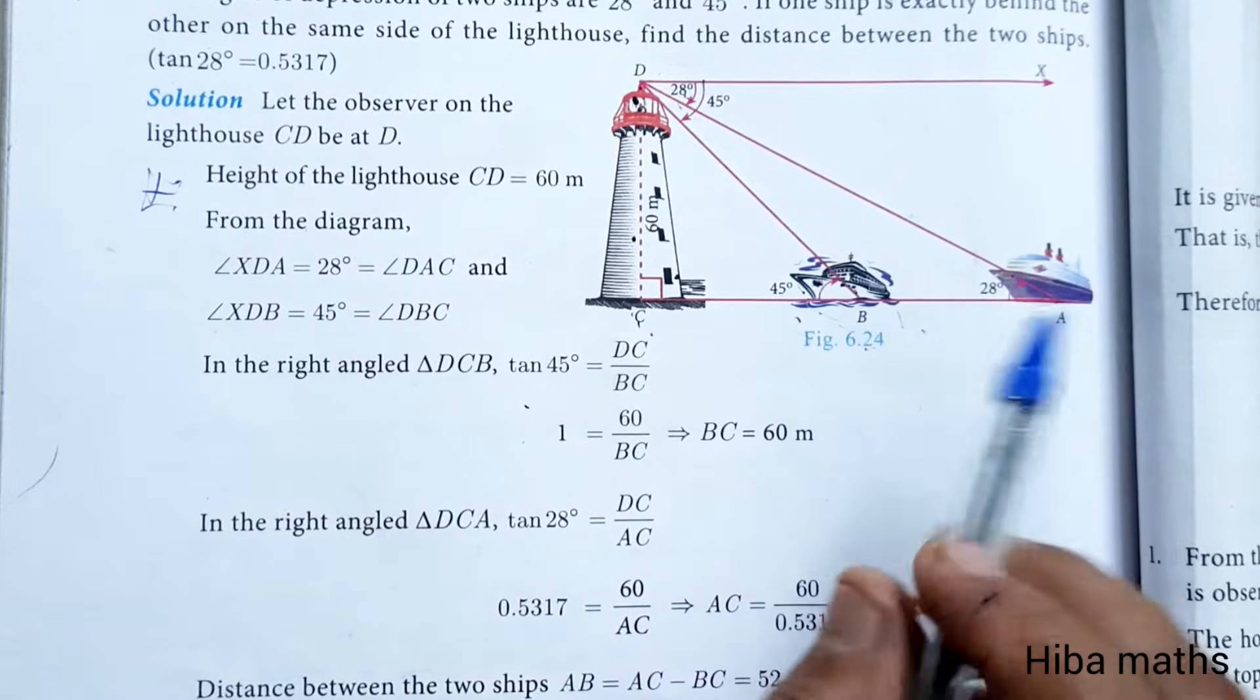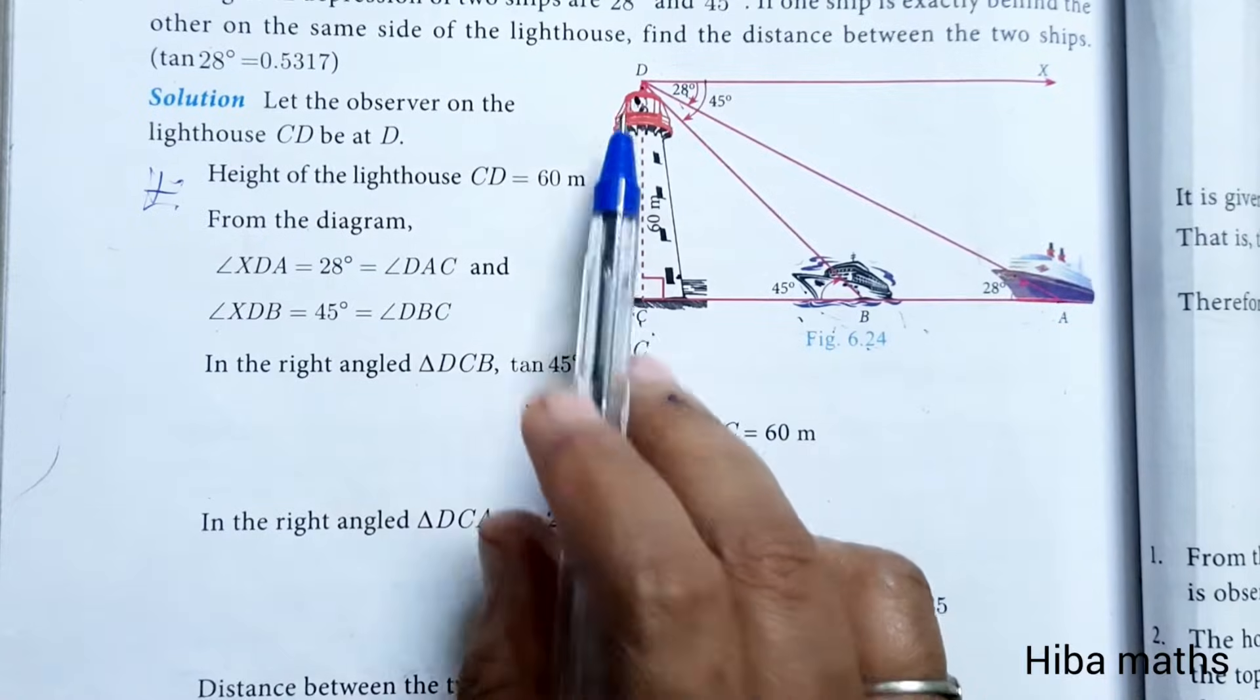There is a distance between the two ships. So this is A, B, C and this is D.